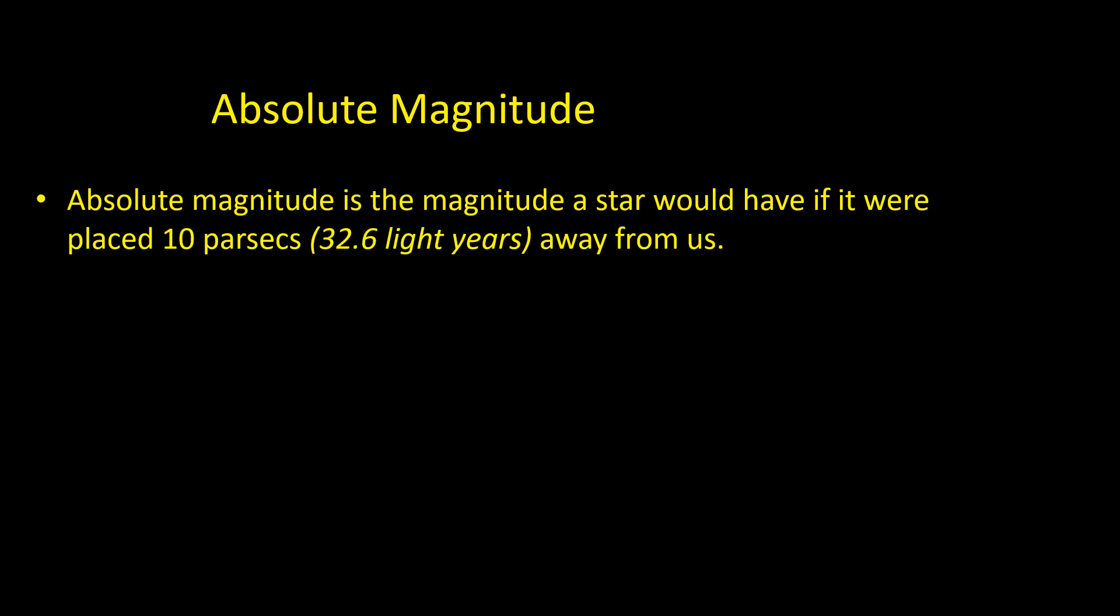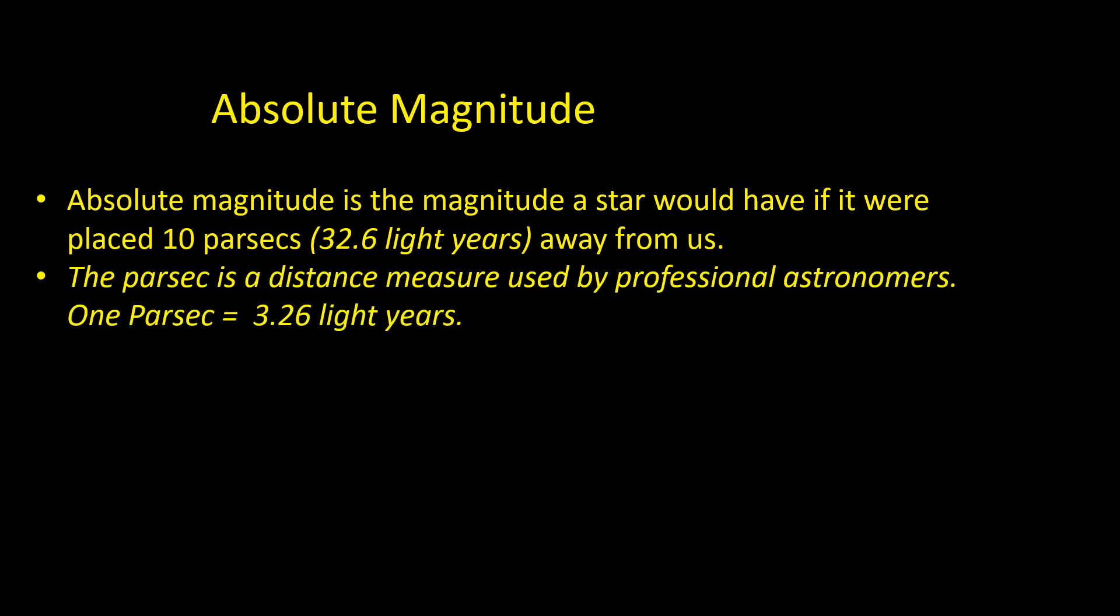Ancient astronomers believed that all the stars were at the same distance from us. In the 19th and early 20th century it became clear, as the distances to more and more stars were measured, there was a large variation. To provide a measure of real brightness, absolute magnitude was introduced. The absolute magnitude is the magnitude a star would have if it replaced 10 parsecs, 32.6 light-years, away from us.